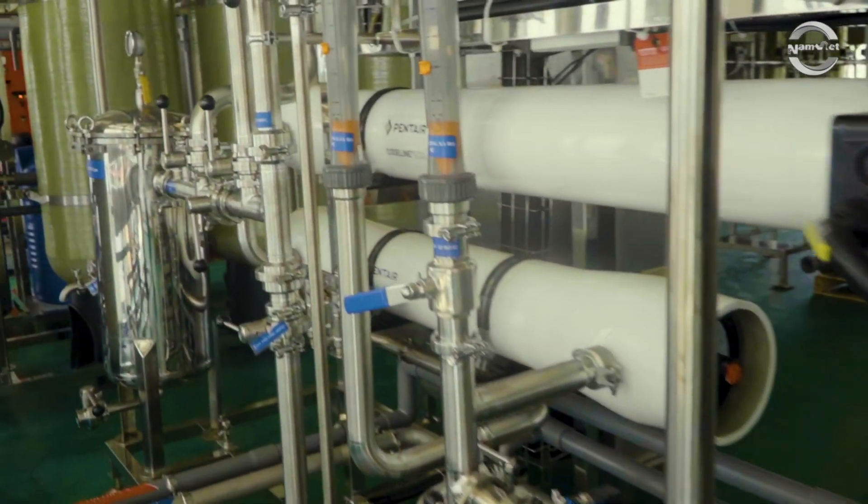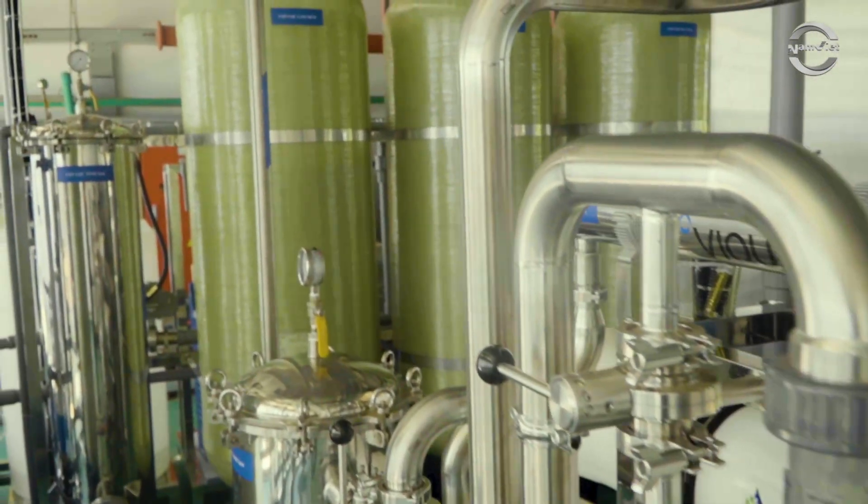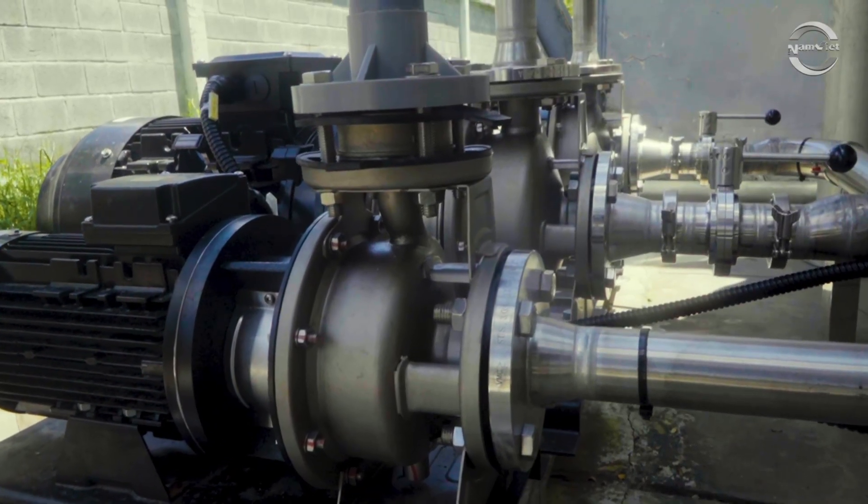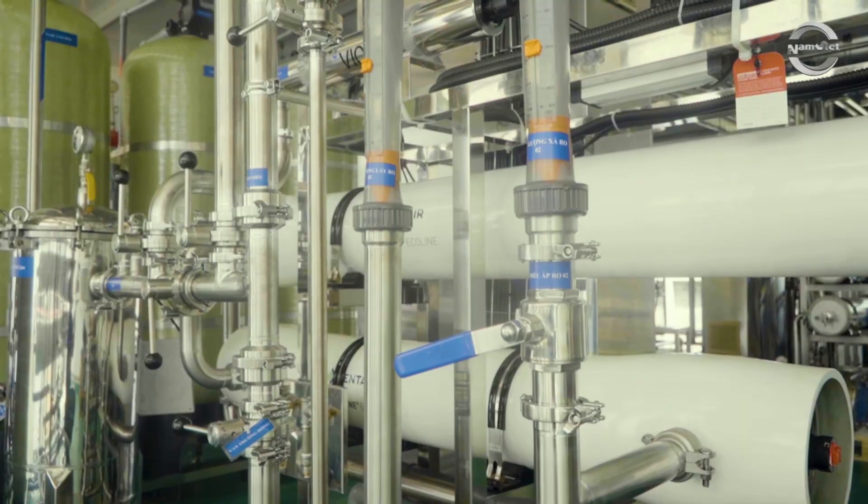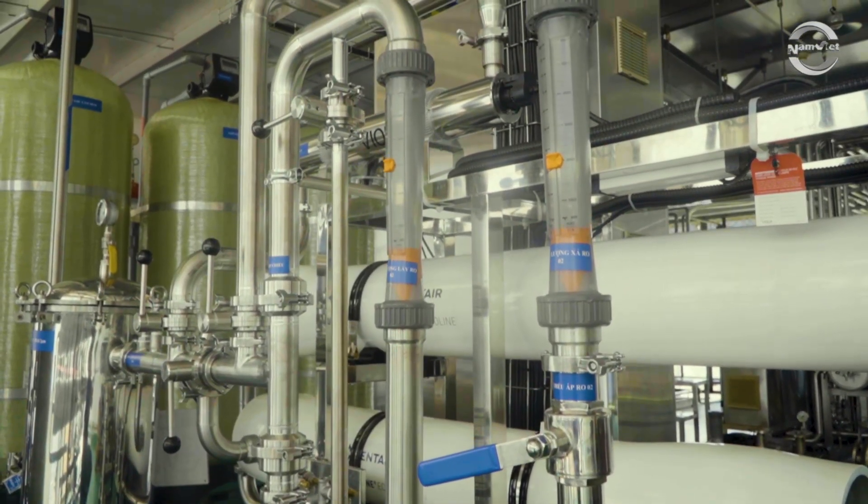All pipes and tanks are made from 316 stainless steel, which is high pressure resistant, corrosion resistant, and ensures compliance with food safety and hygiene standards. Contact us now for consultation and installation of a pure RO water filtration system for salinity treatment.